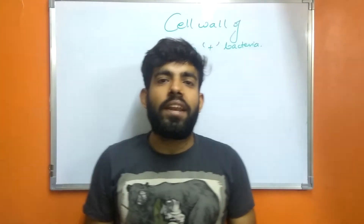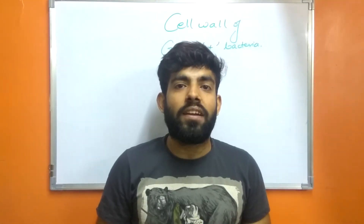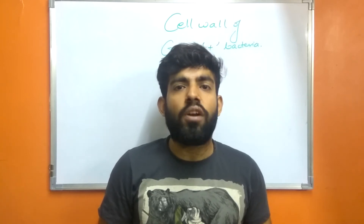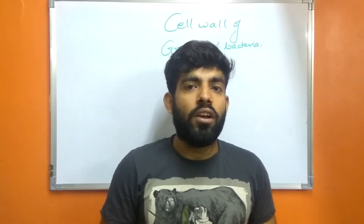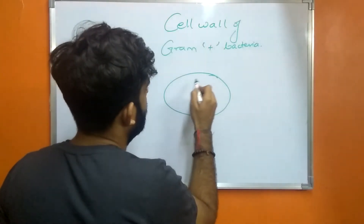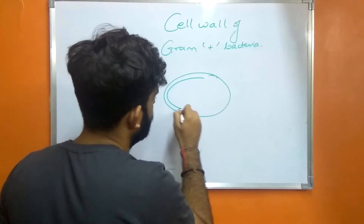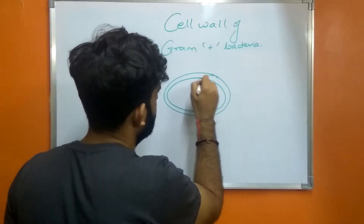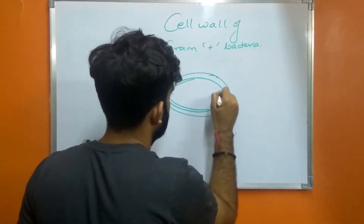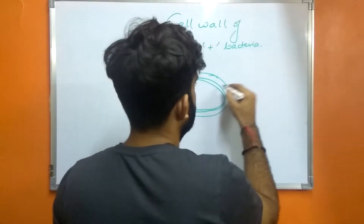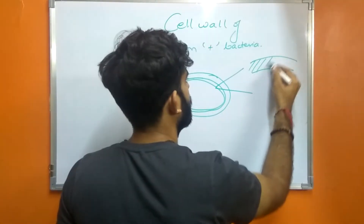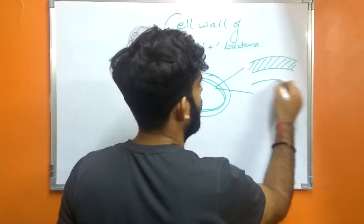The cell wall of a gram-positive bacteria has many layers of peptidoglycan, which makes it thick and rigid. The cell wall of gram-negative bacteria does not have many layers of peptidoglycan. So if I take a bacterium that is gram-positive, the cell wall will be thick.